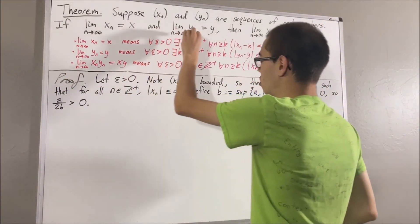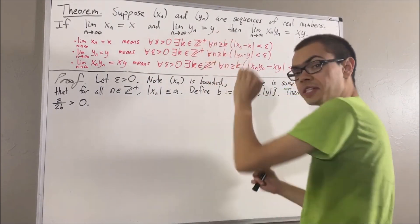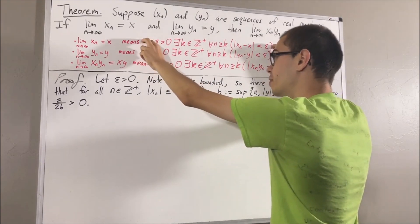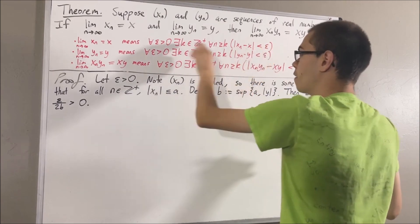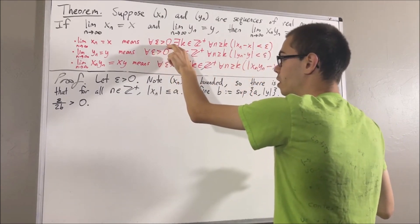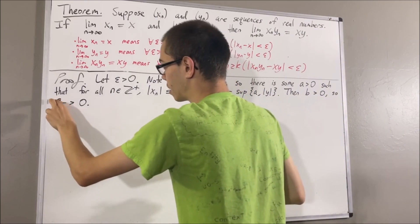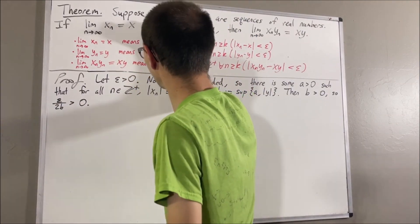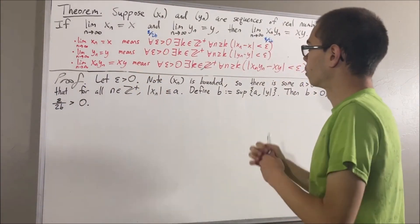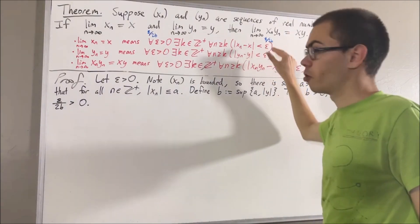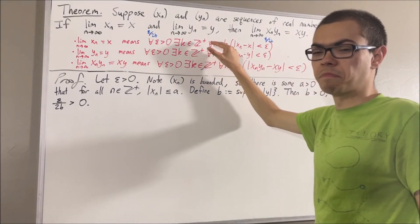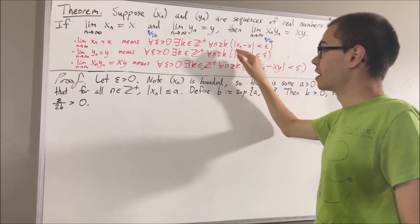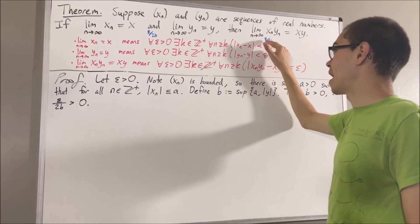Since we know that xn converges to x and yn converges to y, we are given that these two statements are true. Considering the first statement, we know it works for every positive real number, so it must work for the positive real number epsilon over 2b. Taking this epsilon to be epsilon over 2b, there is some positive integer — I'll call p — such that for all positive integers n greater than or equal to p, the absolute value of xn minus x is less than epsilon over 2b.